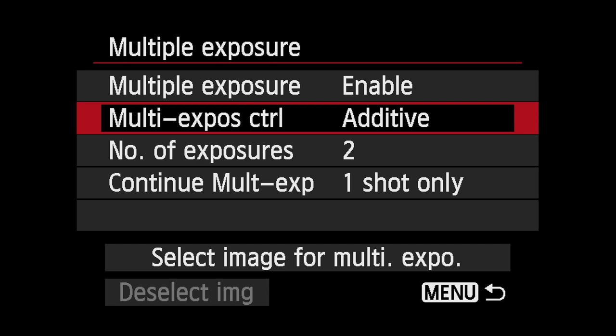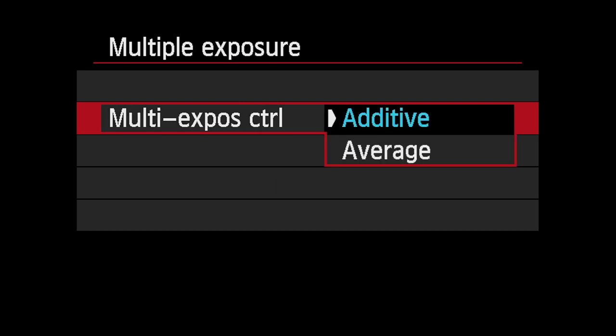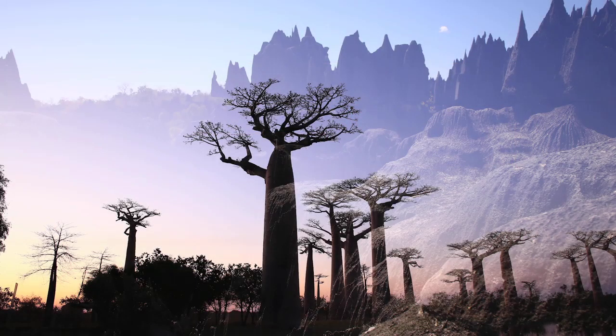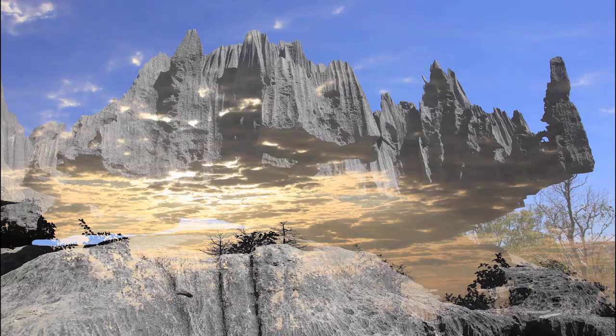You have two different options for combining the images you've taken into one multiple exposure file. The Additive method simply stacks images on top of each other. This is similar to how multiple exposures of different scenes or subjects are composited in a film camera. If bright areas on two separate images overlap, their combined brightness will increase.